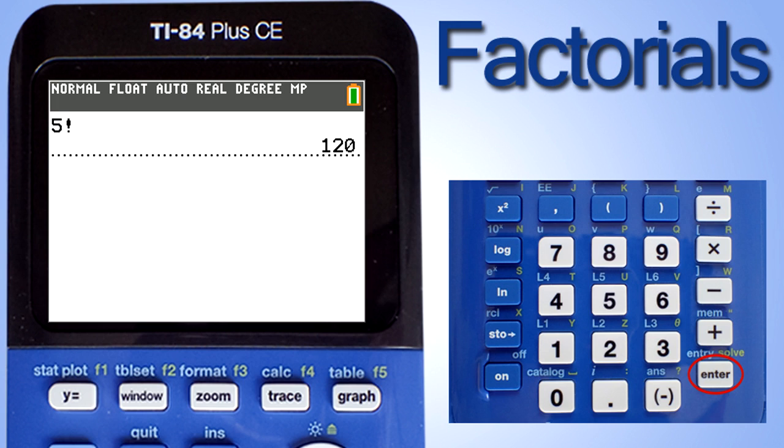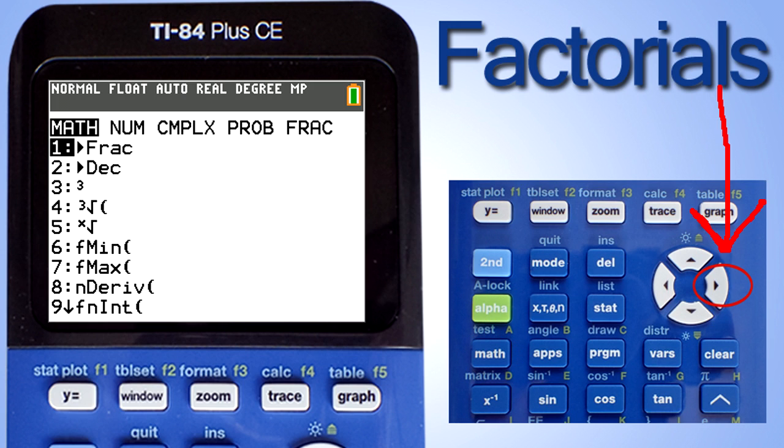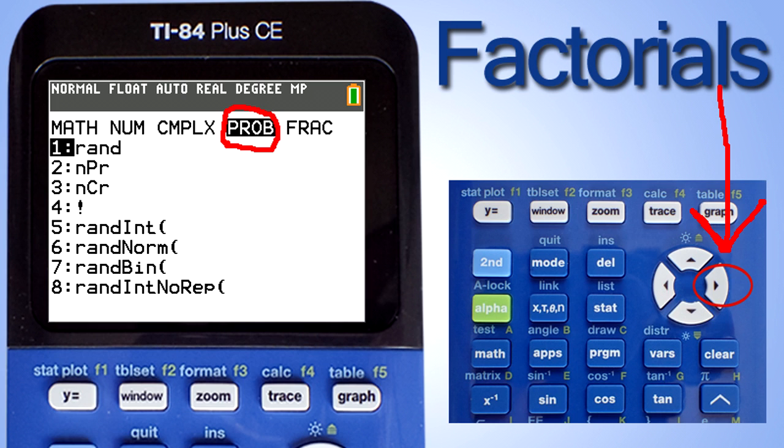Let's do a larger number. Say 50 factorial. Enter a 50. Enter the factorial symbol by pressing the math key here. Use the right arrow key and go to PROB for probability. Go down to number 4. Press the enter key.